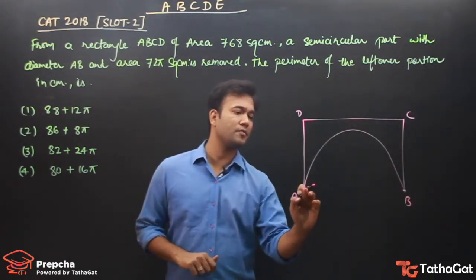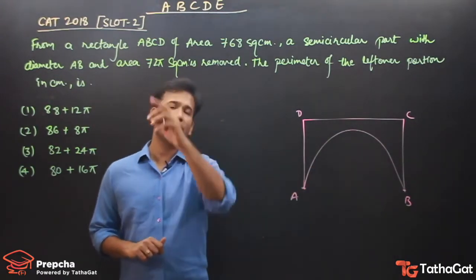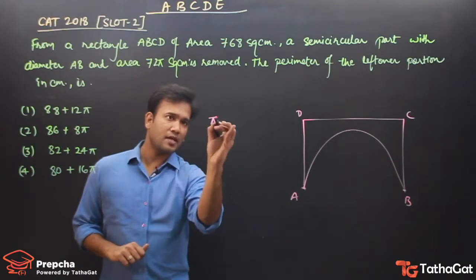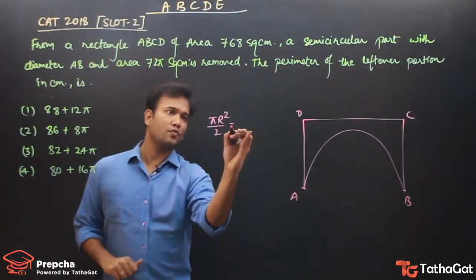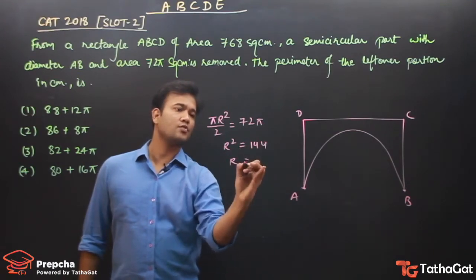For this figure's perimeter, the first information we can use is that the semicircular part area is 72π. Semicircular area equals πr²/2, which equals 72π. From here, r² = 144, so r = 12.